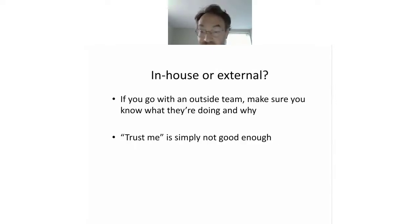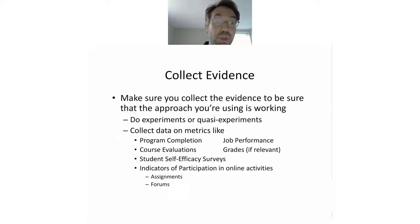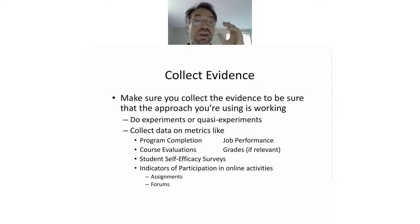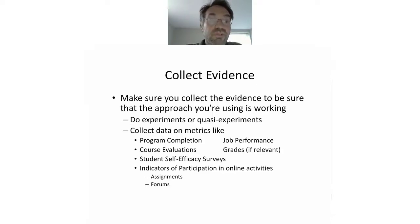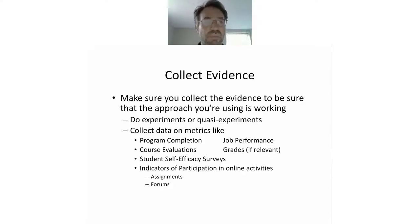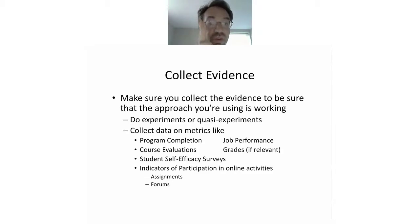If you go for an outside team, make sure you know what they're doing and why. Make sure you collect the data to verify that the approach you're using is working. Do experiments, do quasi-experiments. Try to say, now that we've switched this new training method, is it better than before? Collect data on things like program completion, job performance — really important — course evaluations, grades if relevant, and ask students if they feel confident that they can do it. Indicators of actual participation. Also, when hiring external teams, make sure you're getting a solution customized to your needs. Take the problem of retention analytics — some vendors build one model once and reuse it for every client, or build a model with no data at all. Ideally, an organization should be using a model built and validated on data from their own organization — this is equally true of talent analytics and HR analytics.